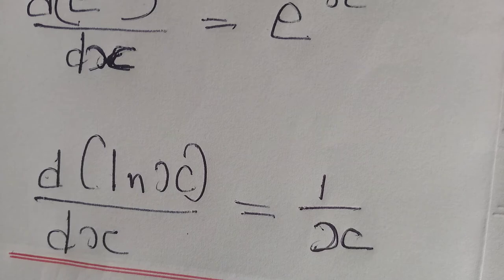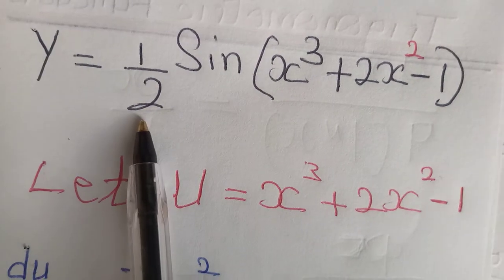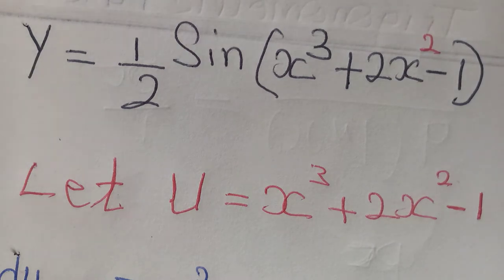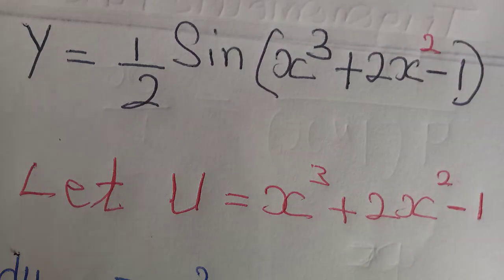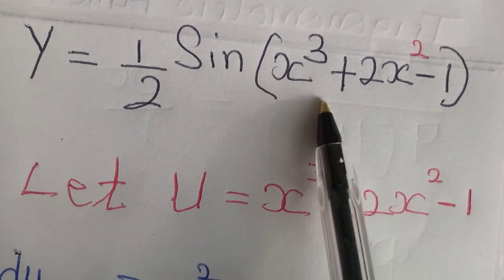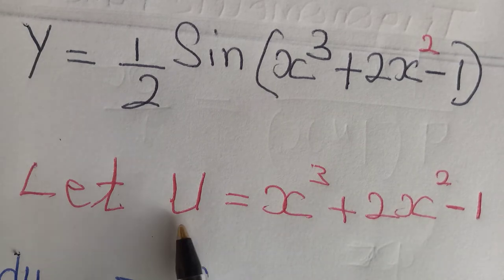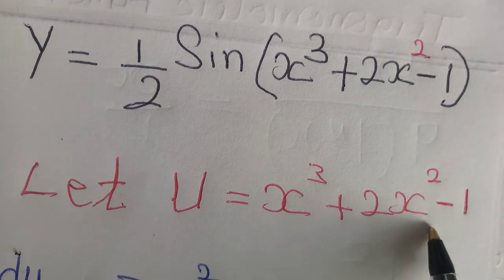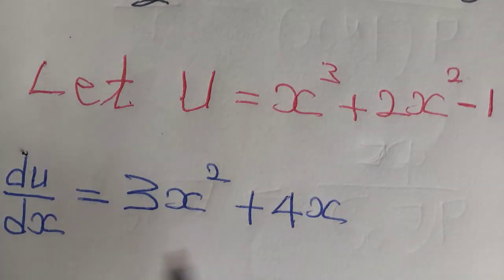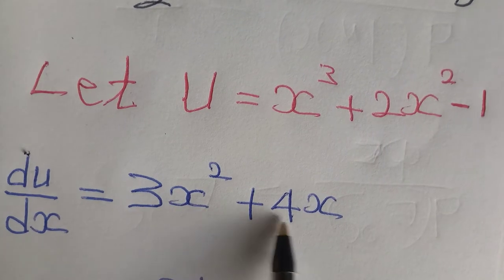So let's now move on to the chain rule application properly. Let us assume y is equal to 1 over 2 sine of (x cubed plus 2x squared minus 1), and you are asked to differentiate this function. This question is very good to illustrate the principles of how the chain rule works. First, you see the argument of this trig ratio sine — just pick a new variable u and equate it to that argument. So I could say: let u be equal to x cubed plus 2x squared minus 1. Then I will differentiate this argument with respect to x, and that will give me du/dx equals to 3x squared plus 4x.